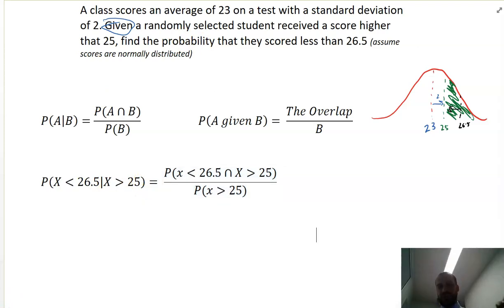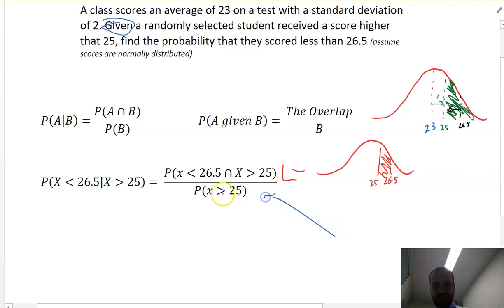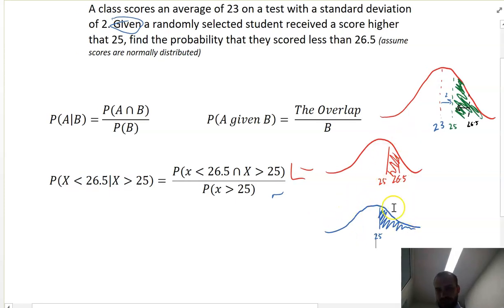Here we've got to do two normal distribution questions. So, we do the top one first. So it's going to be a normal distribution. X is less than 26.5 and more than 25. So we're just finding that bit in there. And then the bottom bit is just X is greater than 25. There's 25, and we're finding greater than 25. So they're lined up now, 25, 25. So we're finding this bit here, we're finding this bit here, and then dividing one by the other.